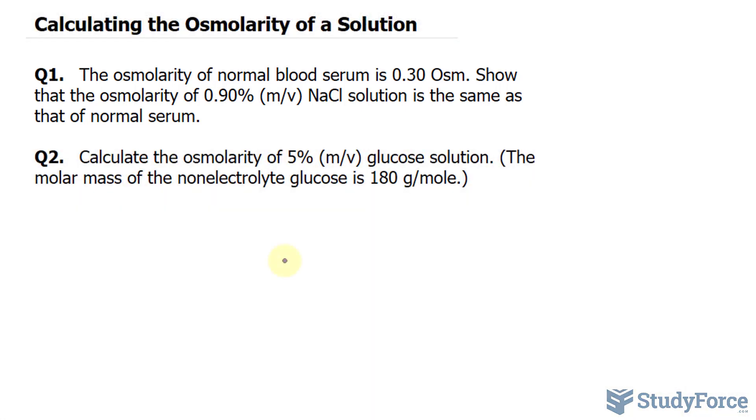I want to start off by writing out the dissociation equation for sodium chloride. Sodium chloride dissociates into sodium ions plus one chloride ion. As you can see, there are two solute particles here.